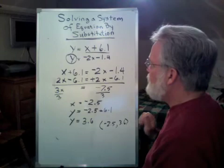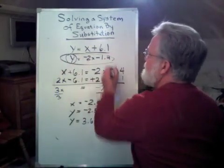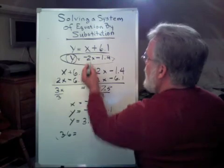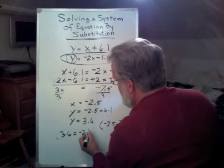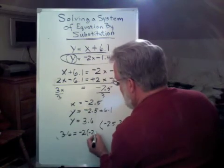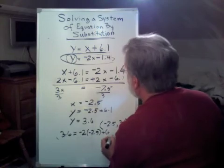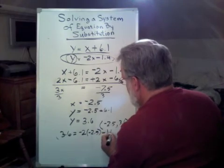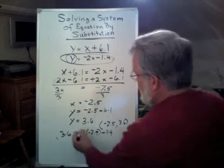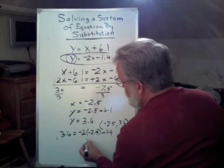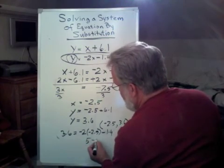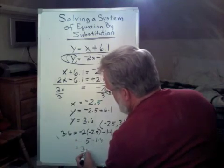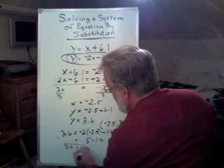I say y equals 3.6 and that equals negative 2 times negative 2.5 minus 1.4. Let's put this through our calculator. We discovered that minus 2 times minus 2.5 is 5 minus 1.4, and putting that through a calculator, I get 3.6. Both sides of my equation equals 3.6.